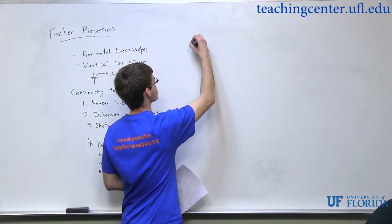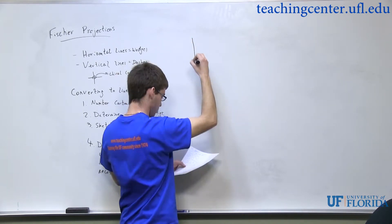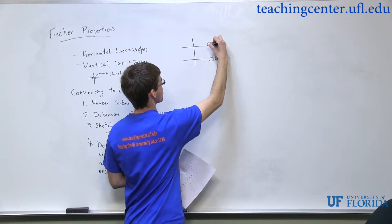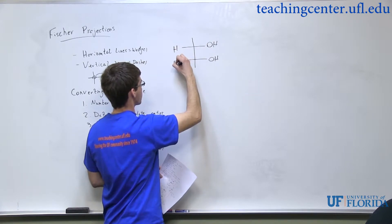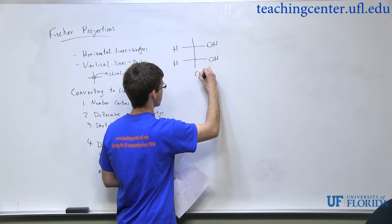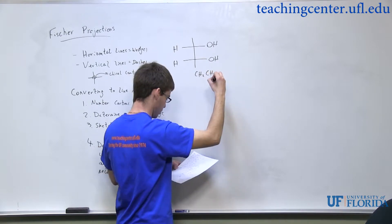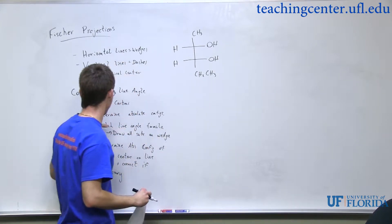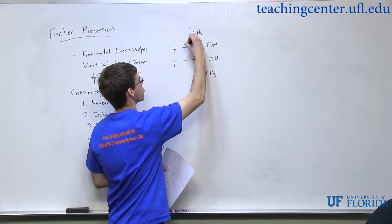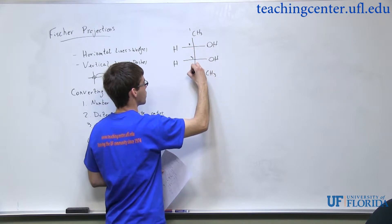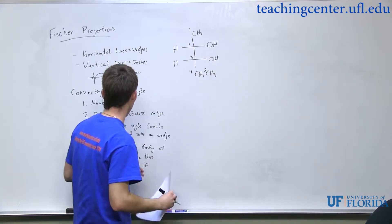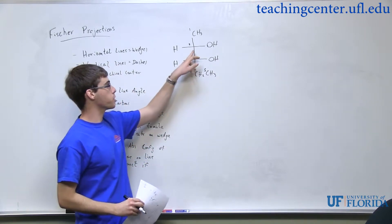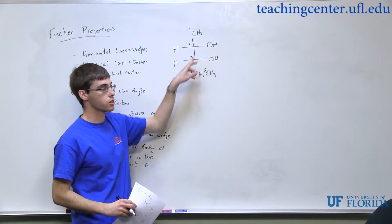Okay, so we've got this molecule. First up, number the carbons — we've got five. So now we've got to determine the absolute configuration. Remember, in a Fischer projection, all the intersections are chiral centers. So we've got two absolute configurations to assign.